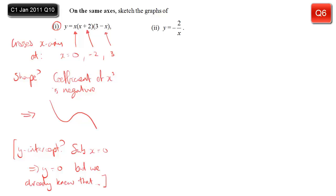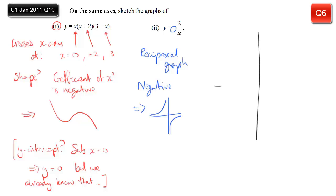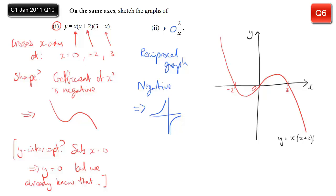The next graph to sketch is a reciprocal graph — because there's a minus sign in front, we know its shape. There are no specific points to calculate since it doesn't cross either axis. Draw the cubic with its known shape and label the points it passes through: minus two, three, and zero. Don't forget to label your axes and label each graph to make clear which is which. Then add the reciprocal graph.